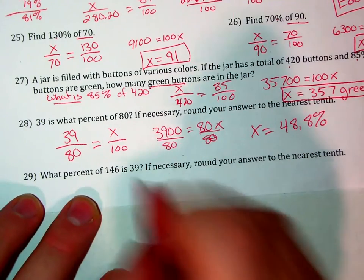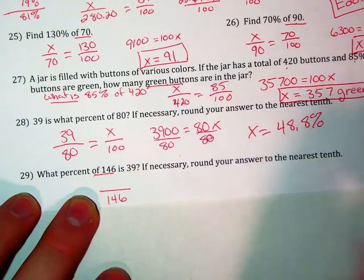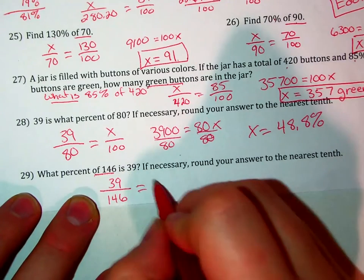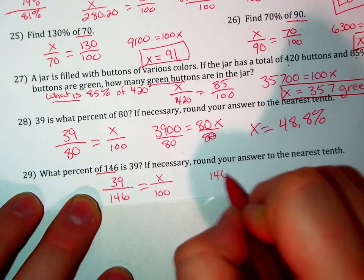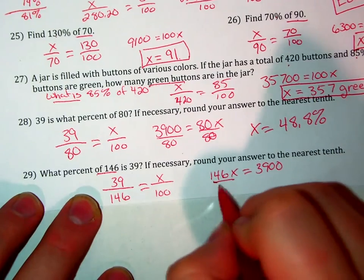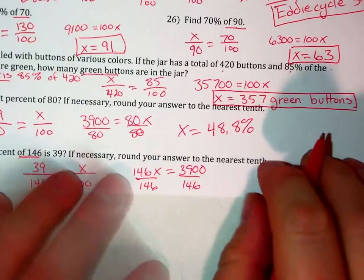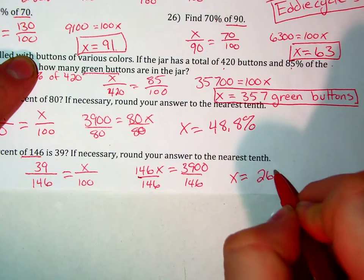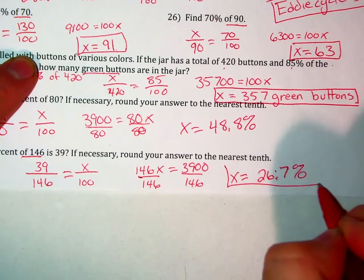Problem 29: What percent of 146 is 39? We're looking for a percent, so X over 100. 146X equals 3,900. Divide both sides by 146, and X equals approximately 26.7 percent.